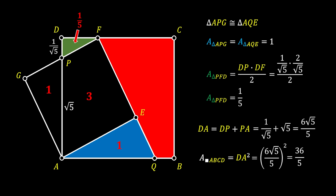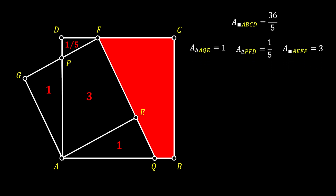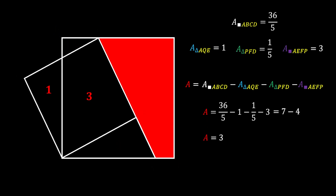Now let's clear our image and recap all the areas we have so far. We can find our red shaded area using the area of the big square ABCD, from which we subtract the area of triangle AQE, the area of the smaller triangle PFD, and the area of the quadrilateral AEFP. After substituting the values and simplifying, we get that the red area is equal to seven minus four, which means our red shaded area is equal to three squared units. This is our solution.